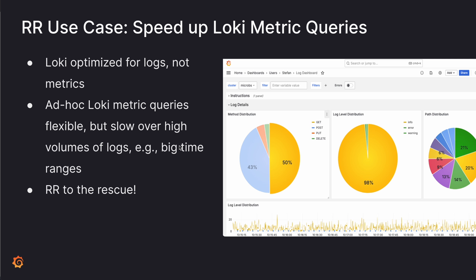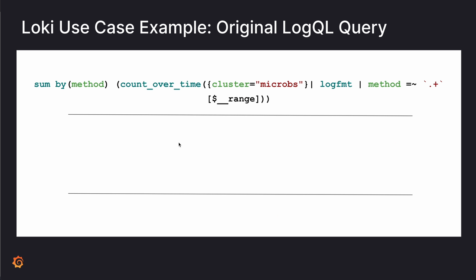This is where recording rules come to the rescue. Take this example query: it takes the log streams of the microbes cluster, does some parsing for the log format, makes sure there's a method in the log line, and then counts the number of log lines in a Grafana dashboard time range `$__range`. Eventually it sums the result by method, so you'd get all the occurrences of HTTP methods and can easily plot the distribution on a pie chart. If your time range — and hence log volume — is small enough, this query is powerful, useful, and flexible as you can add additional filter statements at any time.